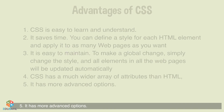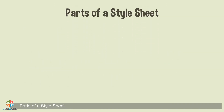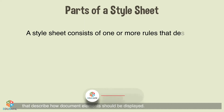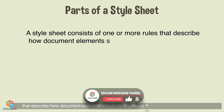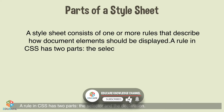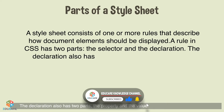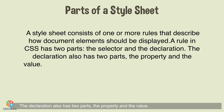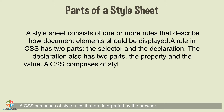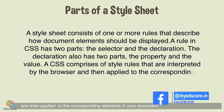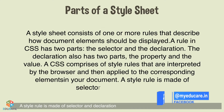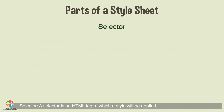Parts of a style sheet: A style sheet consists of one or more rules that describe how document elements should be displayed. A rule in CSS has two parts: the selector and the declaration. The declaration also has two parts: the property and the value. A CSS comprises style rules that are interpreted by the browser and then applied to the corresponding elements in your document.